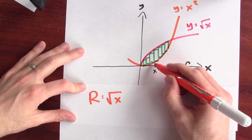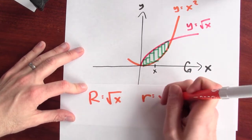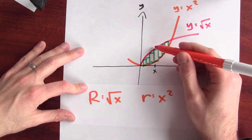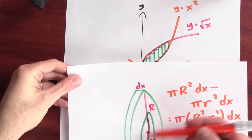And then the inside radius is on the orange curve, and that's given by x squared. So little r is x squared. And that's the outside radius and the inside radius in my washer picture here.